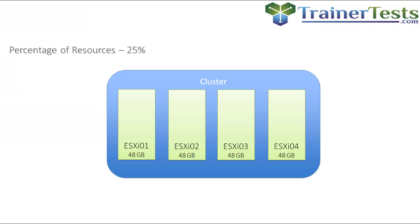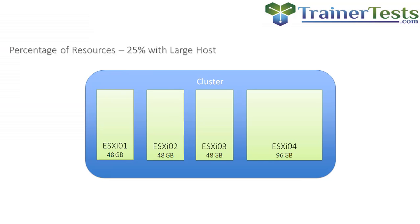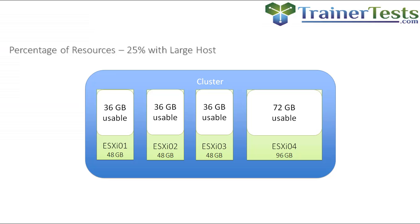With the percentage method, there are no tricky slot sizes — it's just a simple percentage that says we're going to reserve 25% of resources for failover. On all of these hosts, 36 gigs out of 48 will be usable. This is a really simple way to do this, and if we take that fourth host and give it more resources — double the memory — we're actually going to get something out of doubling the memory of that host. We'll get double the amount of usable memory because we're using a simple percentage, and this also helps reduce the odds that somebody's going to turn off Admission Control because they can't boot up a VM.